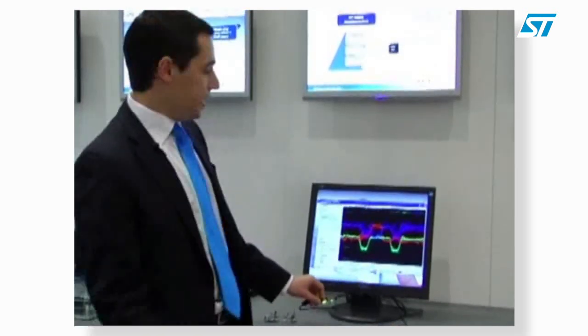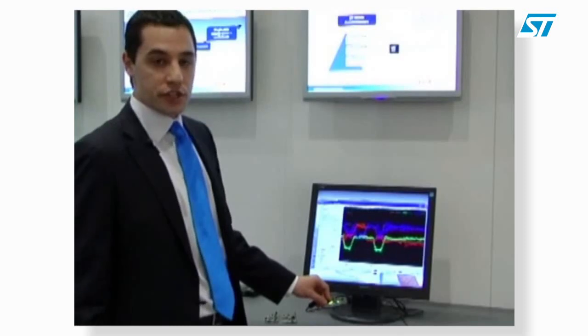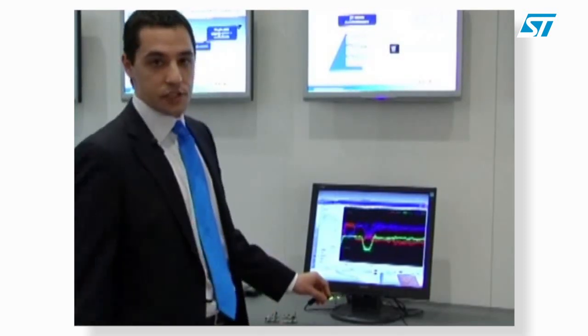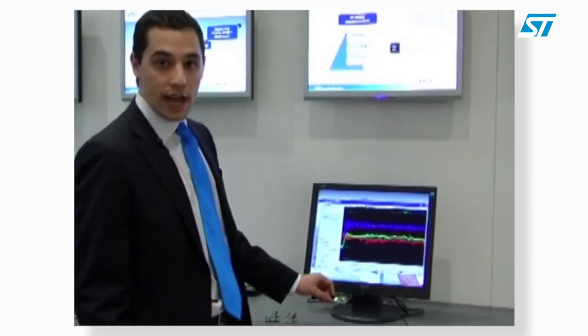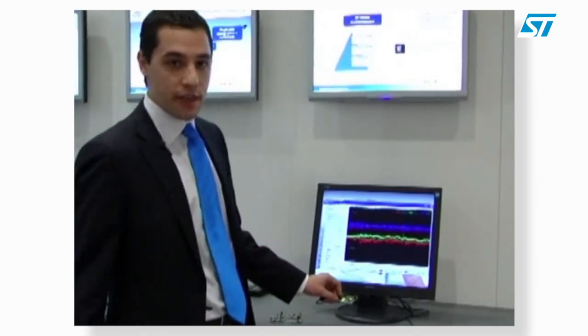And obviously, you can also have a look at the real acceleration data on each axis. The green and red colored are the X and Y axes, while the blue one is the Z axis.